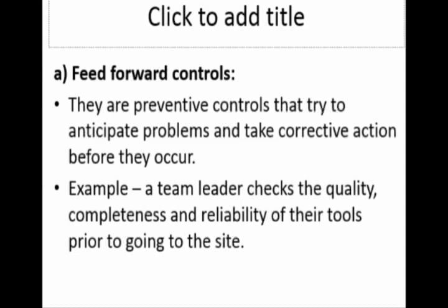We just evaluate the inputs and ensure things are in proper order. An example is given here: a team leader checks the quality, completeness, and reliability of the tools prior to going to the site. If we need to get the best performance, the team leader should ensure that the quality of the tools being used is highly reliable and sufficient to perform the task so that we can get the best outcome. The stage at which we give control for that particular event is the input stage — that's what we call feed forward control.